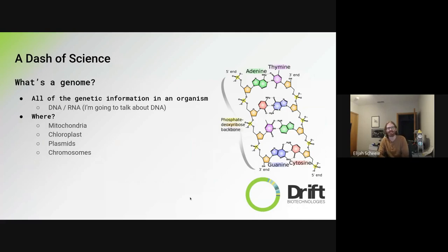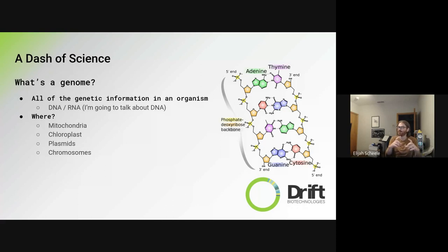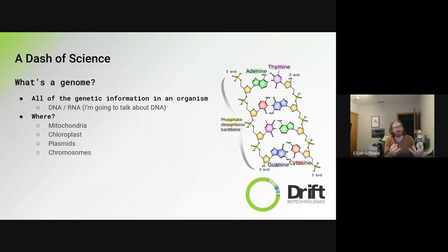It's a pretty complicated process that starts with understanding what a genome is. A genome refers to all of the genetic information inside of an organism, and there are multiple sources of this. You can find DNA in mitochondria in animals and humans, in chloroplasts in plants, and plasmids — these free-floating loops of DNA not contained in a nucleus inside bacteria. And of course on chromosomes. All of these contribute genetic information that helps make an organism what it is.